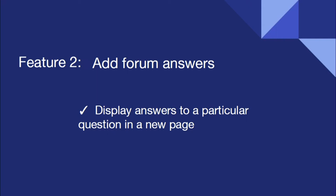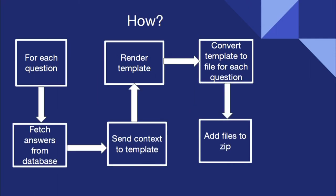The next missing feature is that clicking a question should open a new page containing answers to that question. We have added this feature as well. For that, we ran a loop for each of the questions and fetched the answers from the database. We then sent the context to a Django template, which displays the question and answers in a particular format with proper CSS. The template is converted to a dynamic HTML file, and for each question of a particular tutorial, a new file is created and added to the zip.